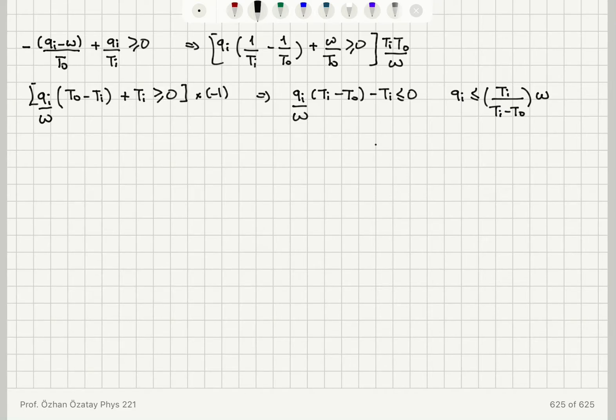So the maximum value for Q I, if W is one kilowatt hour, then the maximum value of Q I would be T I divided by T I minus T out.